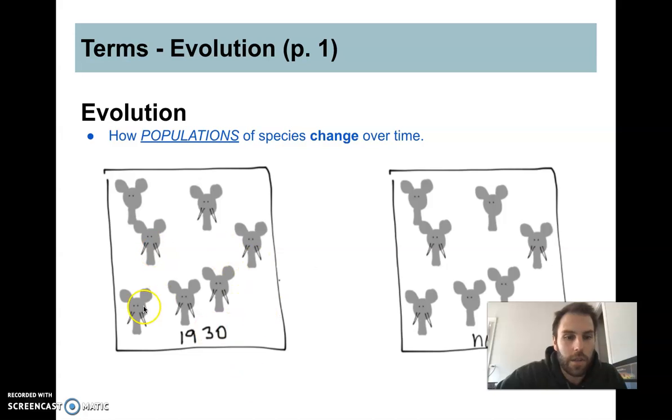So let's look at a really simple example. Here we have a population of elephants in 1930 and we've noticed that there's a different amount in terms of their tusks, right? Less tusks. So the population has changed. Evolution has occurred.